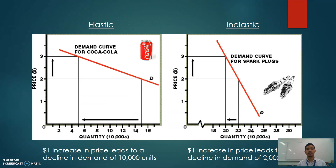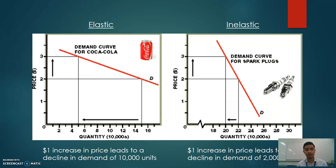How does this look on actual demand graphs? On the left I've plotted the demand curve for Coca-Cola, and on the right the demand curve for spark plugs. For Coca-Cola, an increase in price from $2 to $3 results in a decline in quantity demanded of 10,000 units — from 15,000 to 5,000 units — a large decline reflecting elastic demand. For spark plugs, the same price increase from $2 to $3 results in a decline of only 2,000 units — a very small change in quantity demanded, representing inelastic demand.